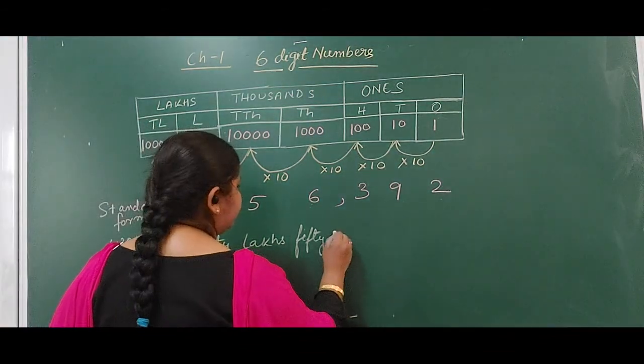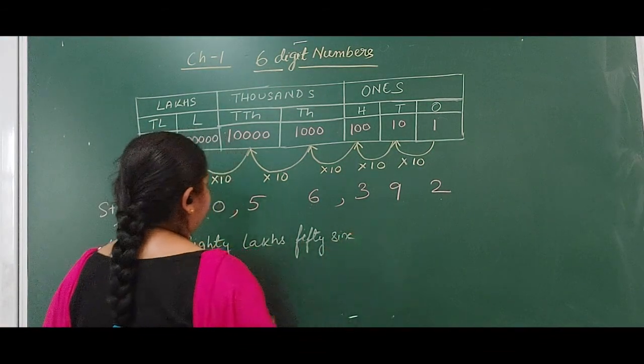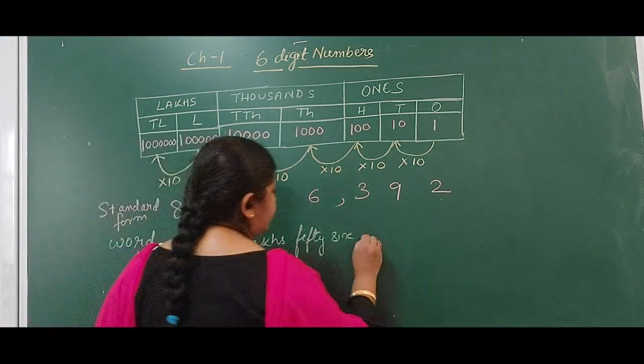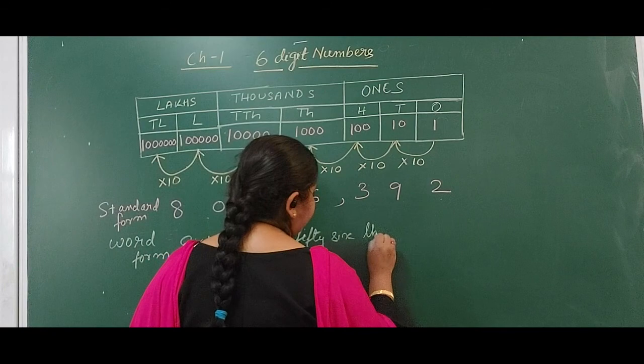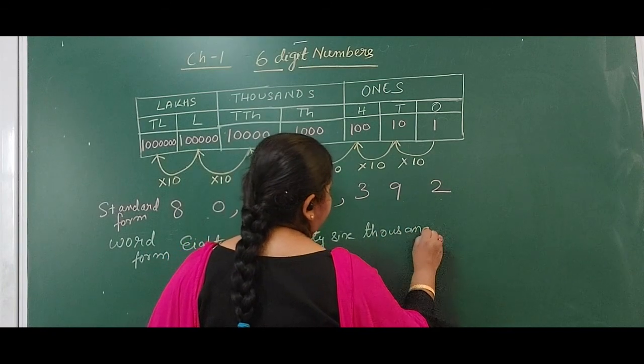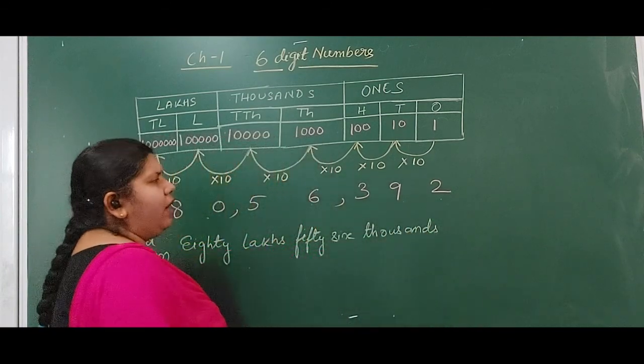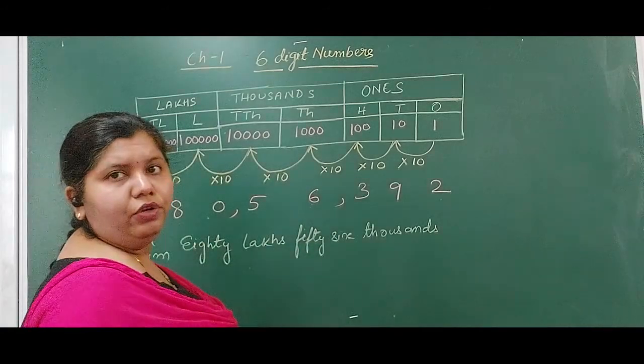So 56 thousands, and then 3 hundred and 98.